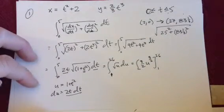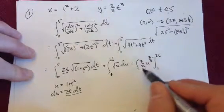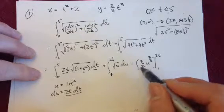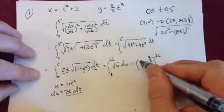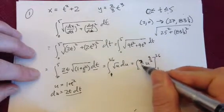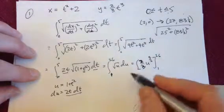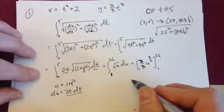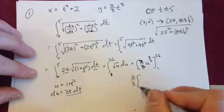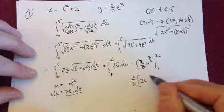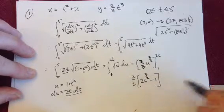And then that gives me 3 halves u to the 3 halves evaluated from 1 to 26. If I evaluate that then, I am going to be able to pull out that 3 halves - wait, that is 2 thirds when I integrate. You've got to watch yourself. I just thought about pulling that out, multiplying, and getting it to cancel, so catching your errors is an important thing to do. So I can then factor that out, it's 2 thirds, and then 26 to the 3 halves power minus 1 to the 3 halves is just 1.